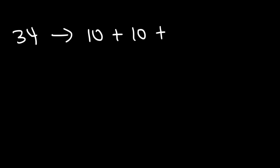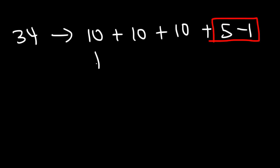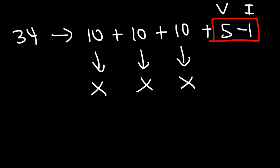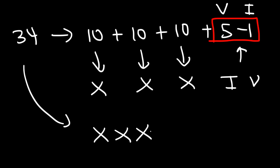Now try 34. 30 is 10 plus 10 plus 10. For 4, it's easier to say 5 minus 1 rather than four I's. Since we have subtraction, we write the letters in reverse order. So three X's for 30, and instead of VI (which is 6), we write IV for 4. So 34 is XXXIV.